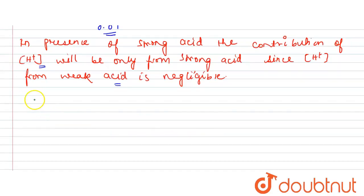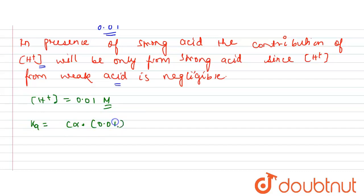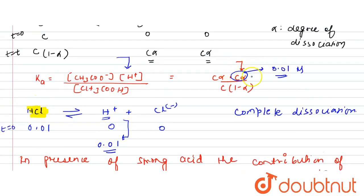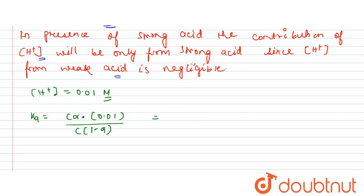So the H⁺ concentration will be 0.01 molar. The Ka expression now becomes: Cα × 0.01 divided by C(1 − α). The C terms cancel out, giving us alpha divided by (1 − α) times 0.01 equals Ka.